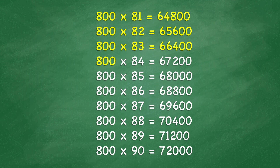800 times 84 equals 67,200. 800 times 85 equals 68,000. 800 times 86 equals 68,800. 800 times 87 equals 69,600.